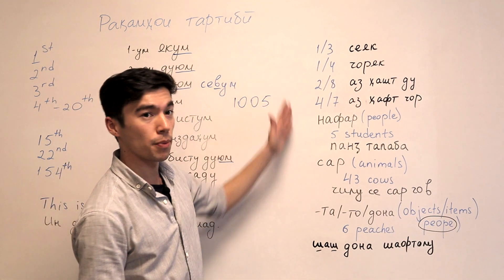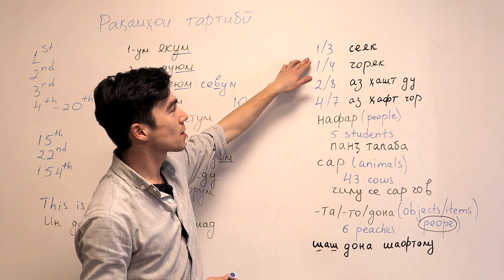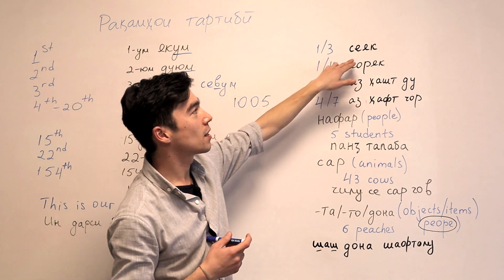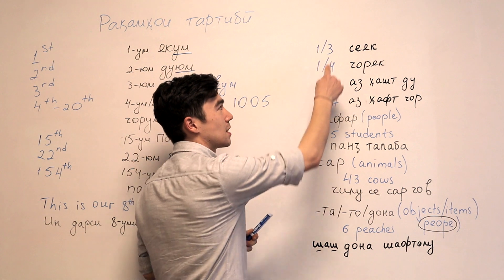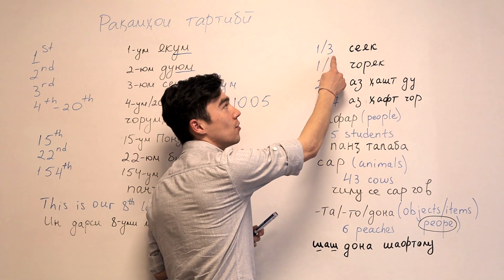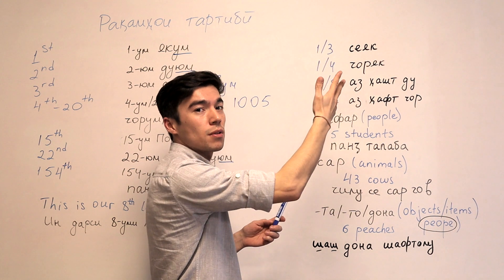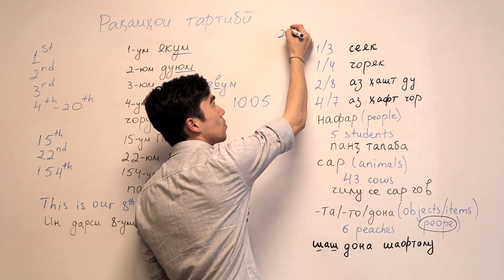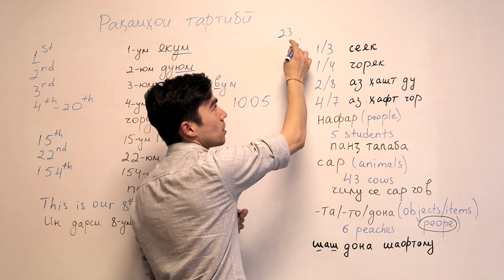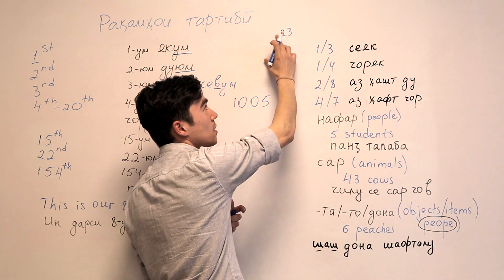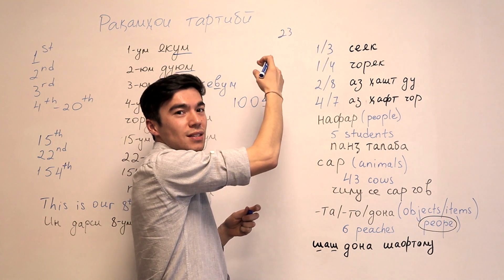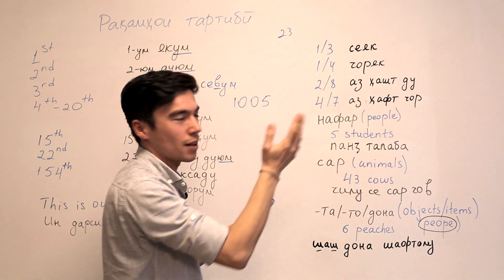Now let's talk about this part. So this is one third. We say SEYAK. So first we say SEYUM. Number three. And then one. YAK. SEYAK. It's the same like German. If they say 23, they first say like DRAI UNT SWANZIG. Like first three. And then 20. So it's pretty much the same like that.